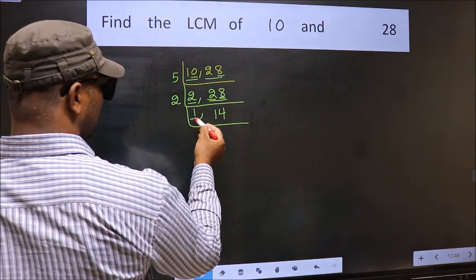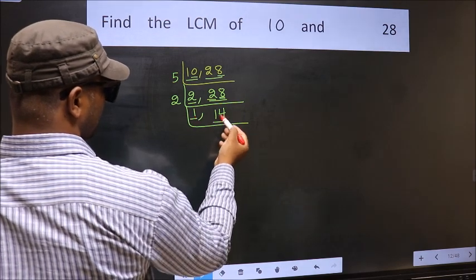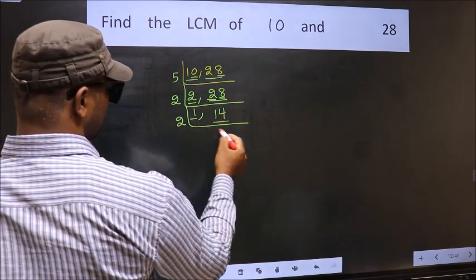Now we got 1 here. So focus on the other number, 14. 14 is 2 sevens, 14.